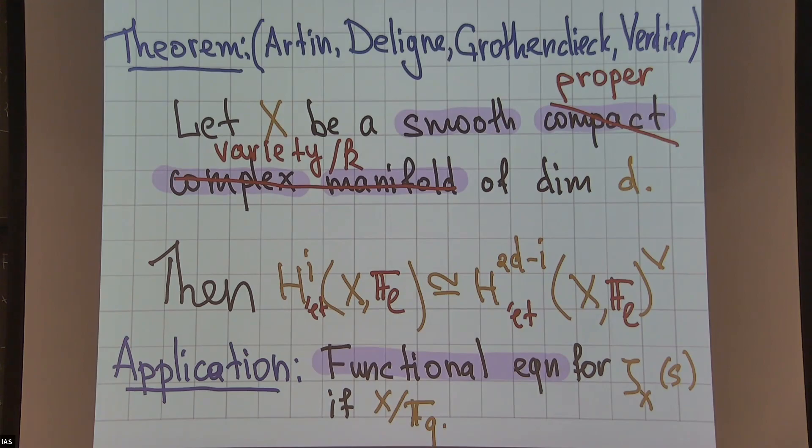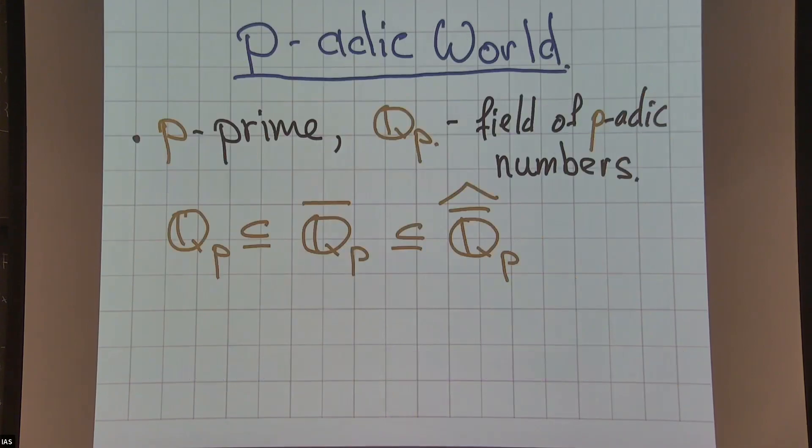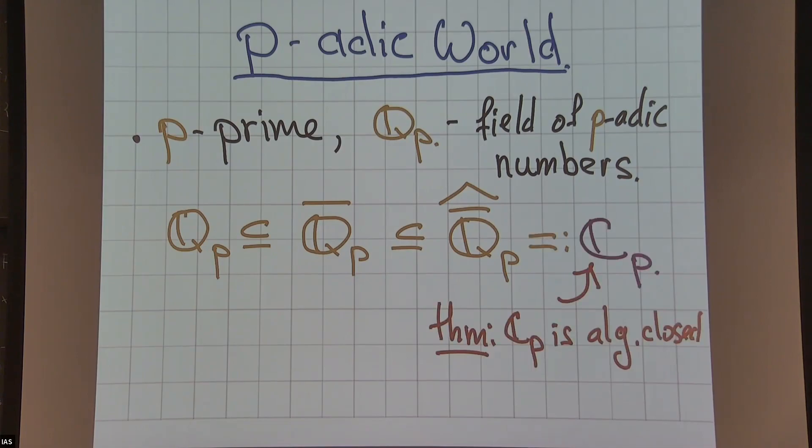The main part of my talk will be about the third world, the so-called p-adic world. Let me explain the setup. We fix a prime number p and consider the field of p-adic numbers, which is a completion of rationals with respect to the p-adic norm. We can take an algebraically closed field - we need to construct an algebraically closed field. The first step is to take the algebraic closure of Q_p, but then it's not complete, so this hat means completion. It's a theorem that this field is actually algebraically closed. This is the analog of the field of complex numbers in the p-adic world.